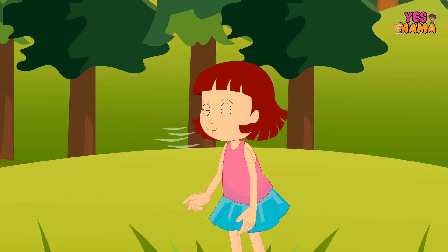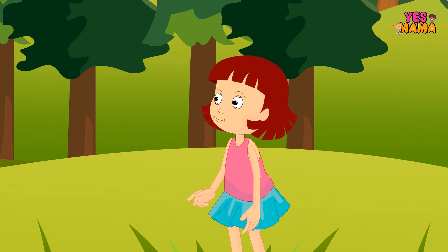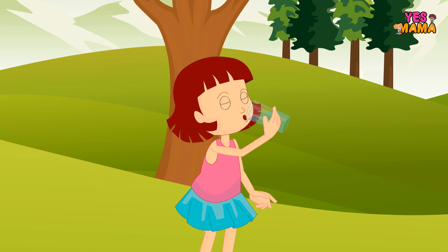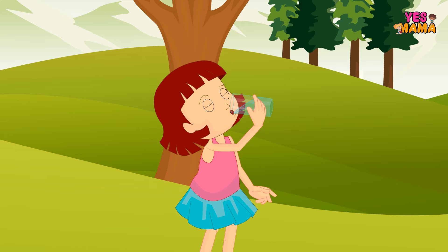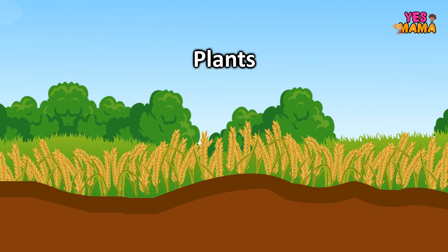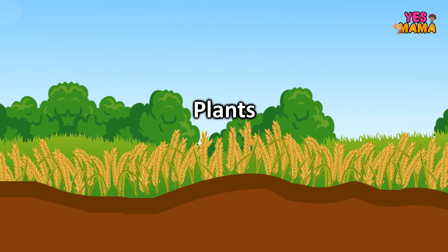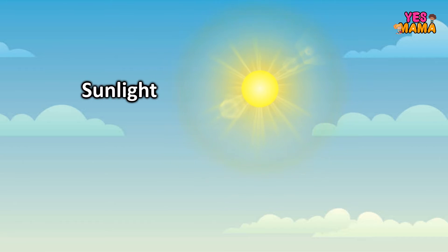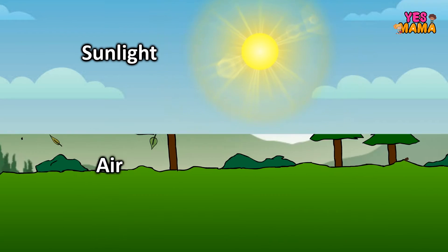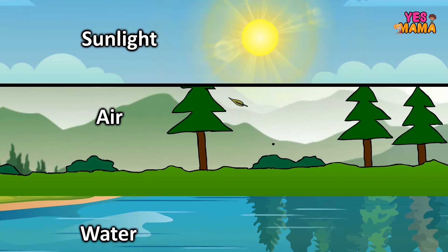We need air to breathe. We need plants to eat. We need soil to grow plants. Some natural resources are sunlight, air and water.